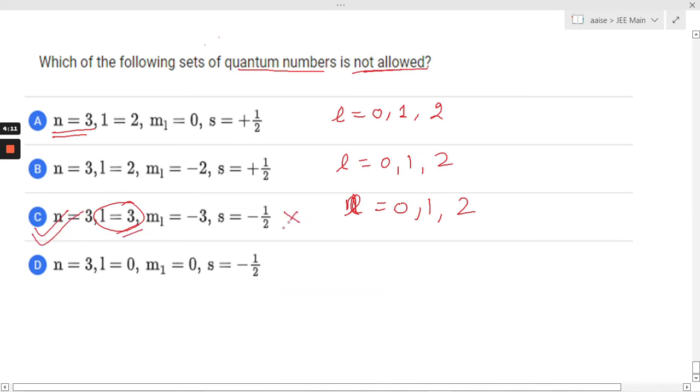How? Because the value of l for a given n equals 0, 1, 2, dot dot dot, n minus 1. If you know this rule, then you can solve this question very easily within a fraction of seconds.